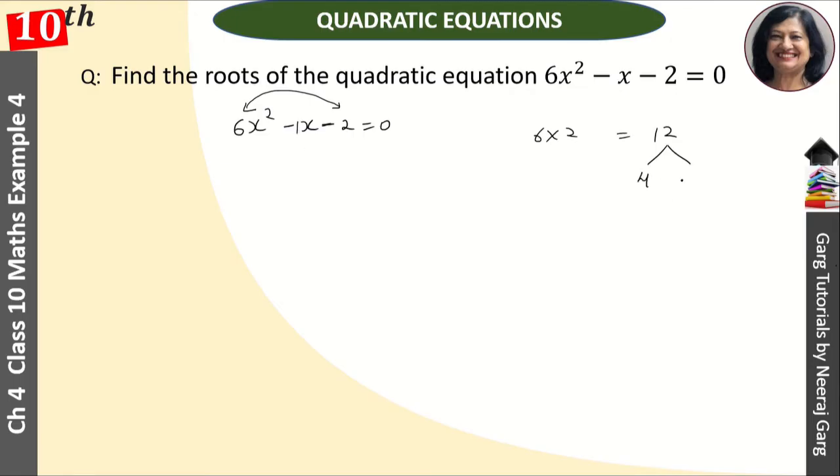The factors of 12 are 4 and 3, and 4 - 3 = 1. Did you understand which factors we are going to use?